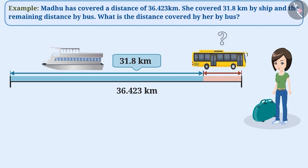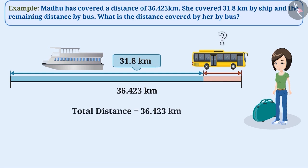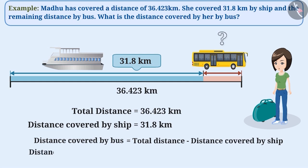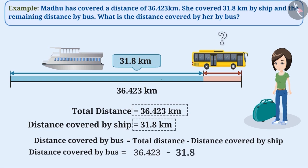From the example, it is clear that Madhu has covered a total distance of 36.423 km. Out of this, she covered 31.8 km by ship. We need to find the distance covered by her by bus. In order to find this, we need to subtract the distance covered by ship from the total distance she has travelled. Therefore, the distance covered by bus is equal to 36.423 km minus 31.8 km.